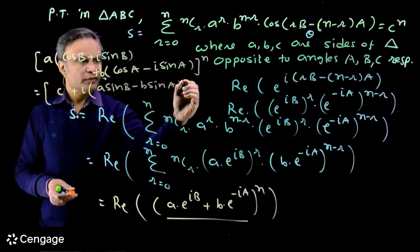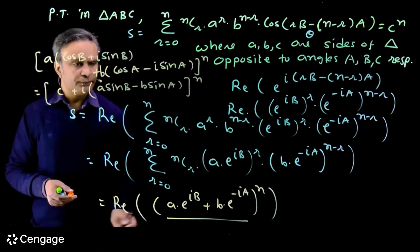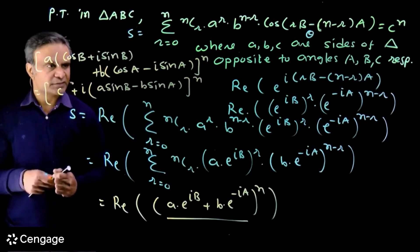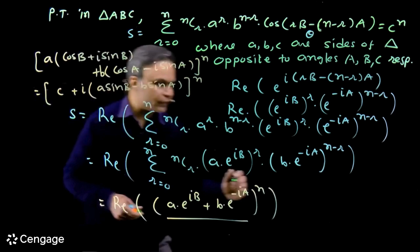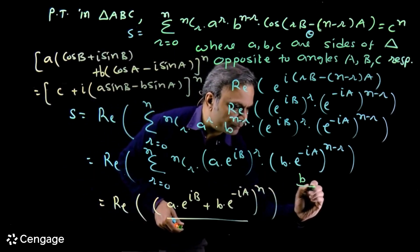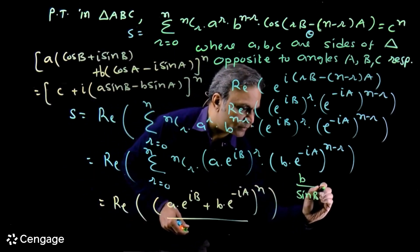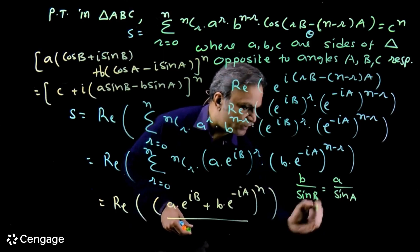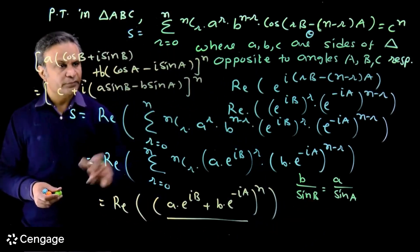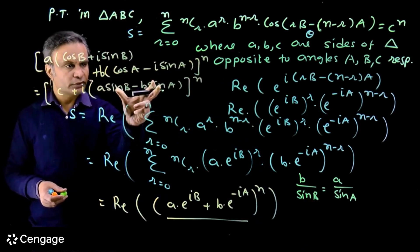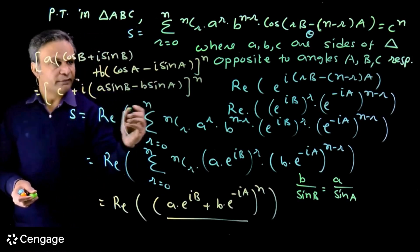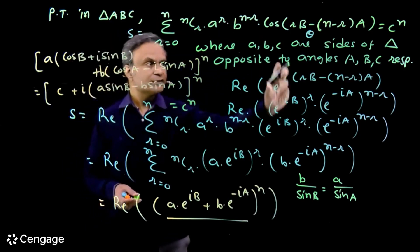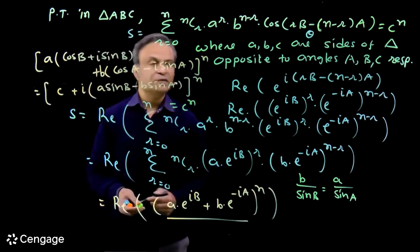The imaginary part is a·sinB − b·sinA. By the sine rule, a/sinA = b/sinB, which gives b·sinA = a·sinB, so a·sinB − b·sinA = 0. Therefore the complex number reduces to c^n, which is purely real. Hence the real part of (c + 0·i)^n = c^n, and the sum of the series equals c^n.